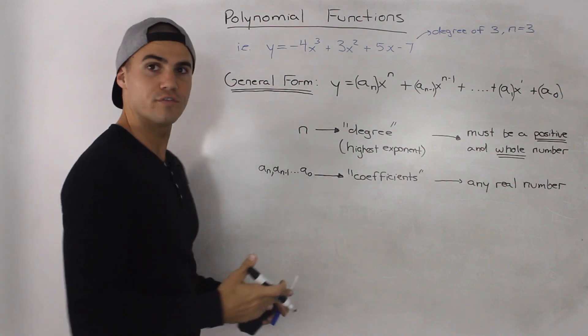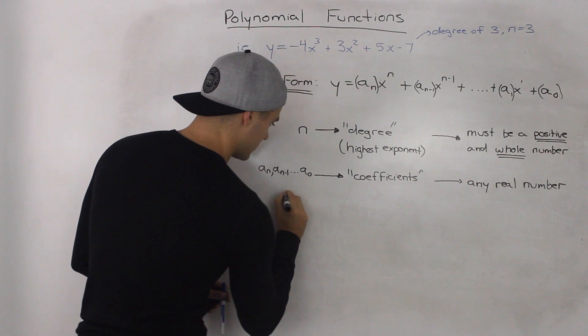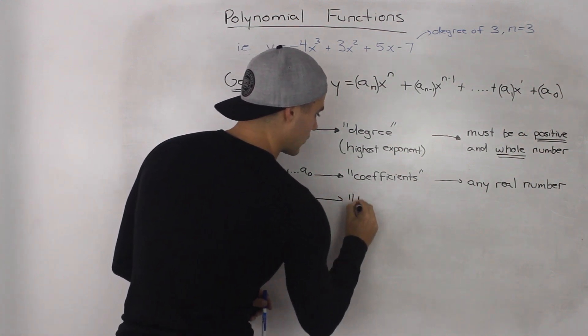Now in terms of the coefficients, we can go into even more detail. So this a_n here, this is called the leading coefficient.